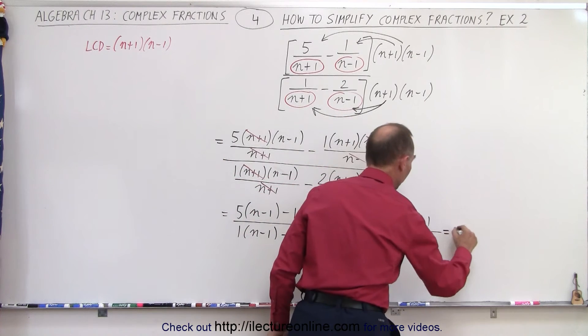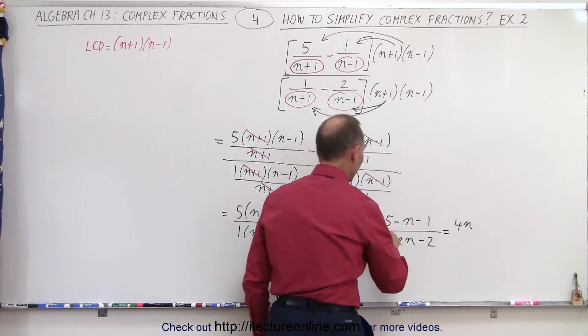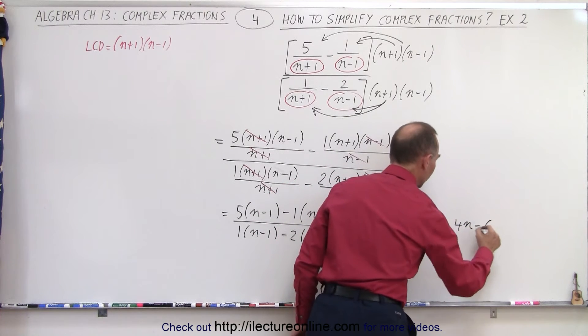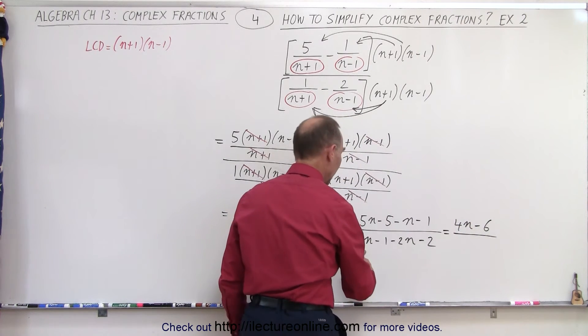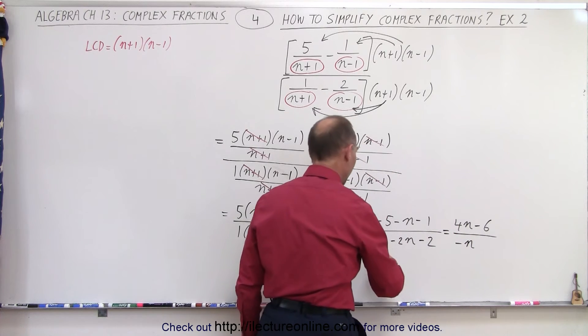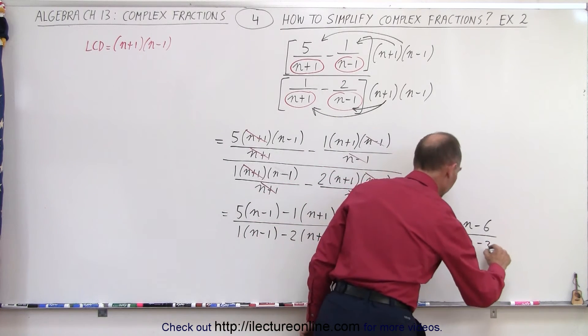Now let's collect common terms. We have 5n minus n, which is equal to 4n. Minus 5 minus 1, that's equal to minus 6. Divided by, here we have minus n, and we have minus 3.